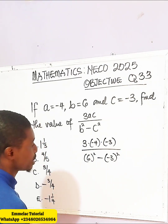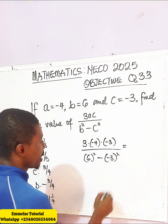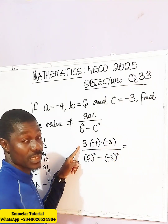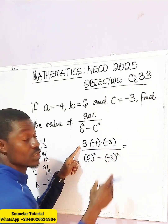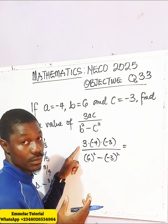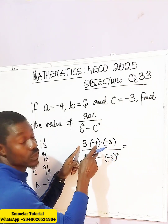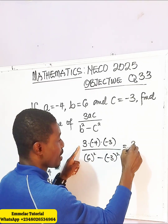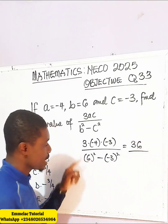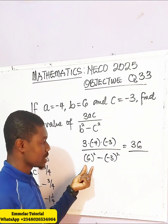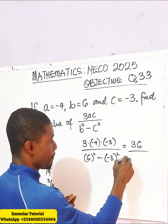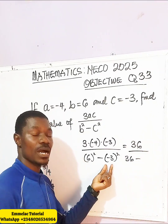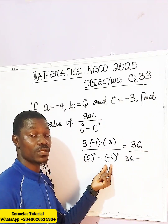So in this case, this will be 3. Now you have to multiply this — this is 12, because minus times minus gives us a plus. So 3 times 12 will give us 36. Then here you have 36.